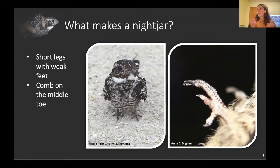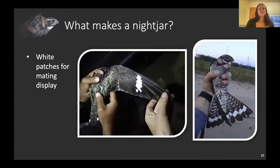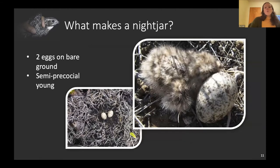All nightjars have large eyes with a reflective layer called the tapetum lucidum at the back of the retina to improve night vision. They have prominent rictal bristles — visible on this individual here — and a tiny bill with a huge mouth to facilitate capturing aerial insect prey. They have short legs with weak feet, and interestingly, all nightjars have a comb on the middle toe, probably for grooming.